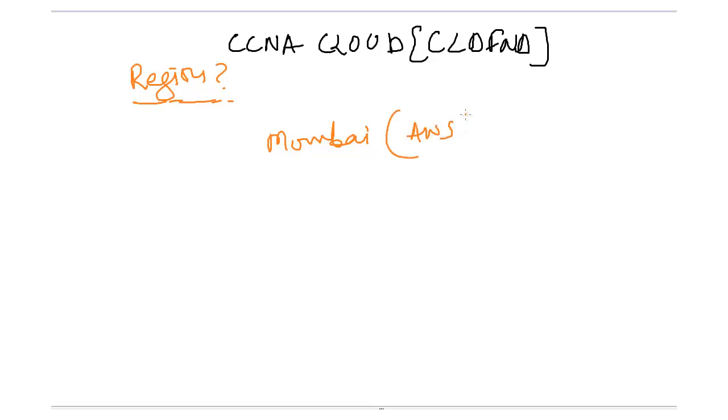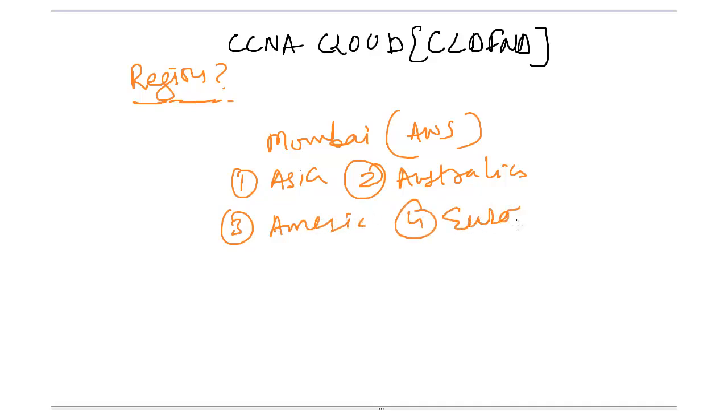AWS cloud. They ask me to pick regions. The first region I see is Asia, second is Australia, third is Americas, fourth is Europe, and fifth is Latin America or South America. These are the continents